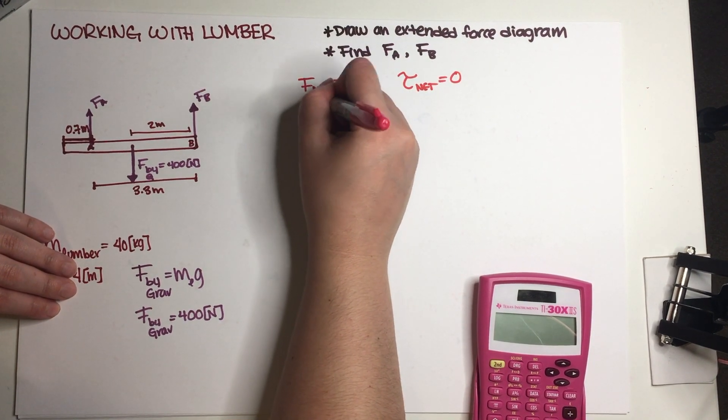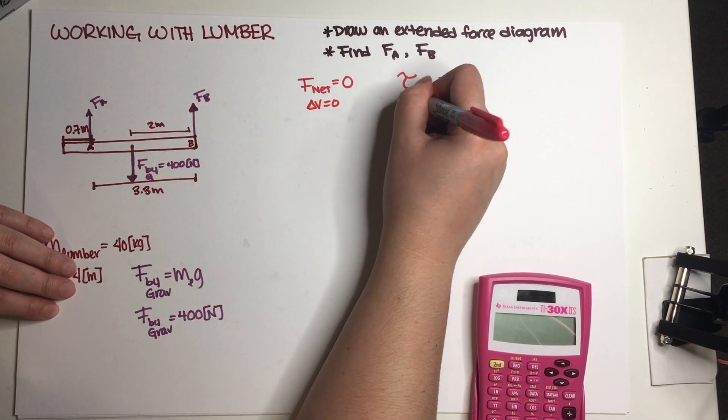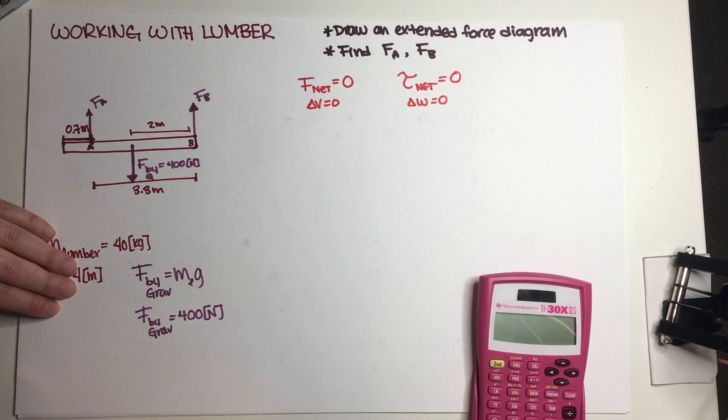This is due to the fact that delta v is equal to zero. This is due to the fact that delta omega is equal to zero.